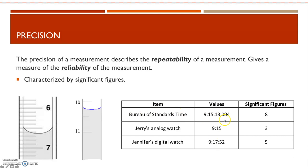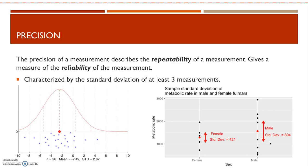You can think about precision in terms of watches too. There's the Bureau of Standards of Time that keeps track of time down to thousandths of a second — eight significant figures. Jerry's analog watch has three significant figures, and Jennifer's digital watch has five significant figures. Therefore, Jennifer's watch is more precise, or more repeatable, than Jerry's watch.